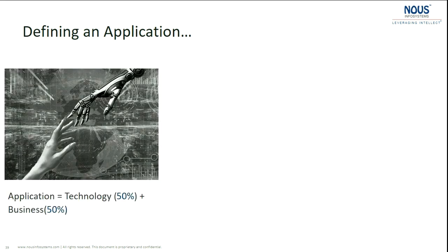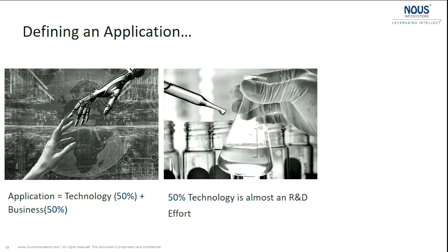An application is a combination of technology and business. You have a business logic, and to implement that business logic you need technologies. For example, I have an e-commerce website — to implement that, I need to use Angular or React. That is how an application is defined.